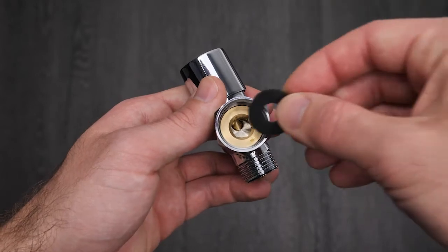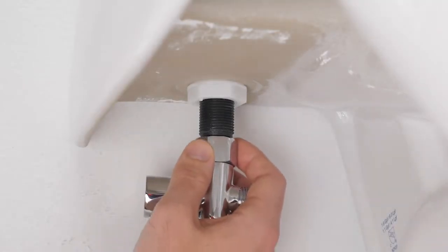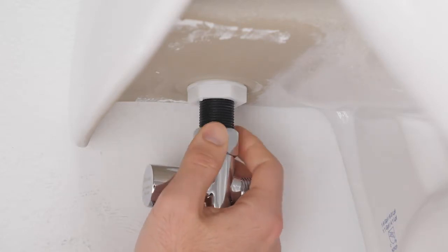Insert the black rubber washer into the T-valve. Connect the T-valve to the fill valve under the toilet tank.